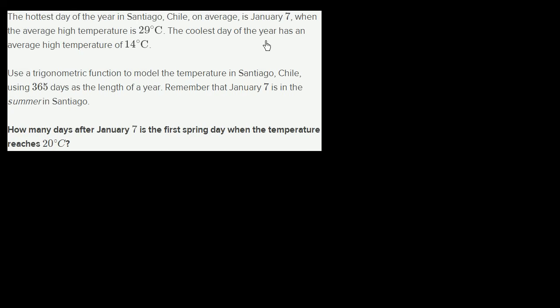The coolest day of the year has an average high temperature of 14 degrees Celsius. Use a trigonometric function to model the temperature in Santiago, Chile, using 365 days as the length of a year. Remember that January 7 is the summer in Santiago. How many days after January 7 is the first spring day when the temperature reaches 20 degrees Celsius?